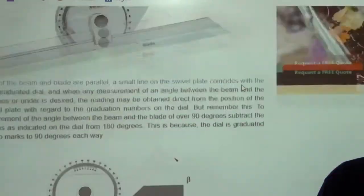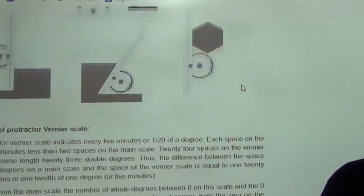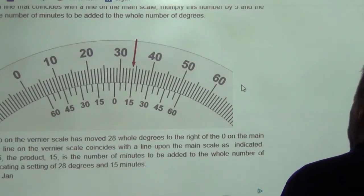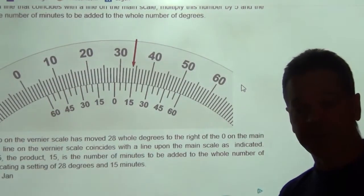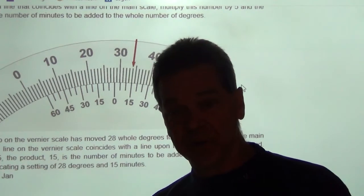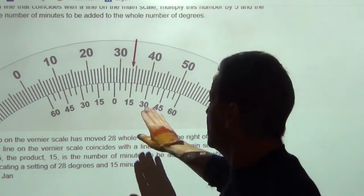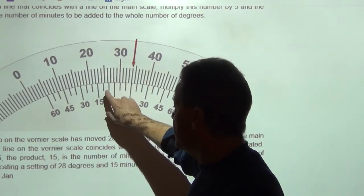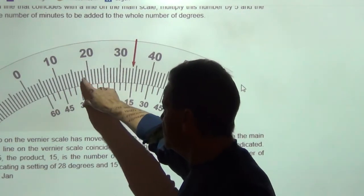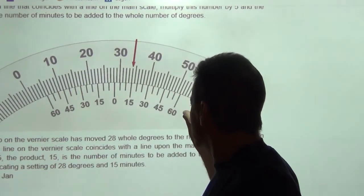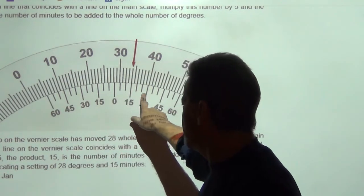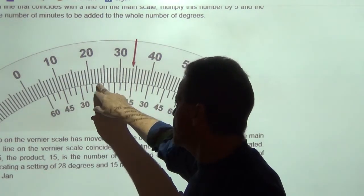So, same as that caliper measurement, you can have a protractor device. And here you would, again, find your whole measurement. This would be called the main scale here. This is the vernier scale down here.